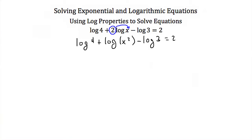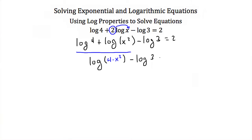Now I have several logs being added and subtracted together, so I'll proceed left to right. The log of 4 plus the log of x squared are added together, so using the product property this becomes the log of 4x squared. This is still being subtracted by the log of 3, and using the quotient rule that gives us the log of 4x squared divided by 3. And this is still equal to 2.